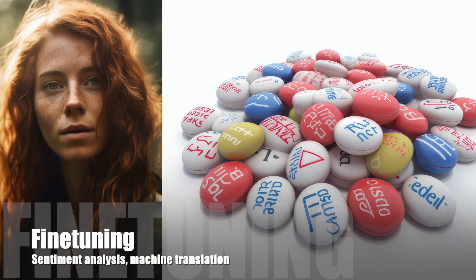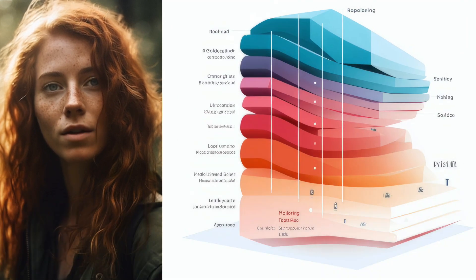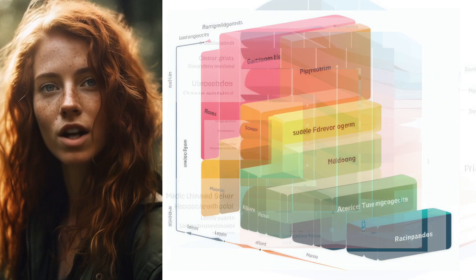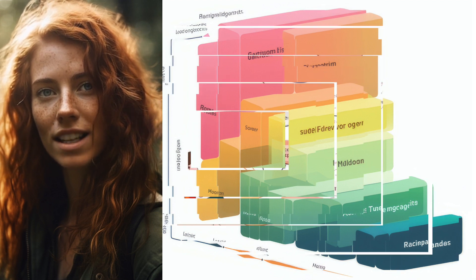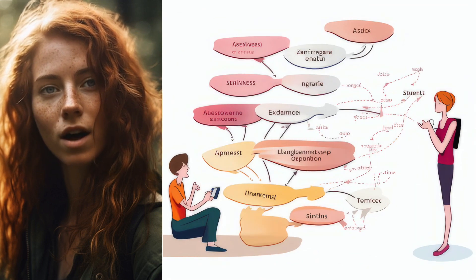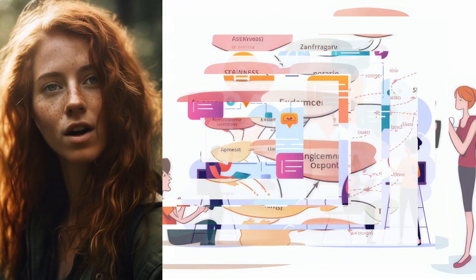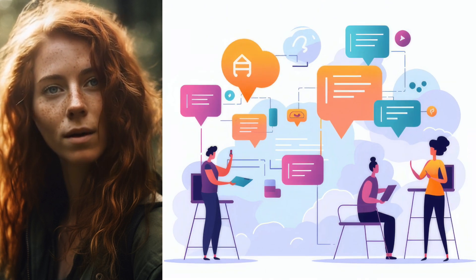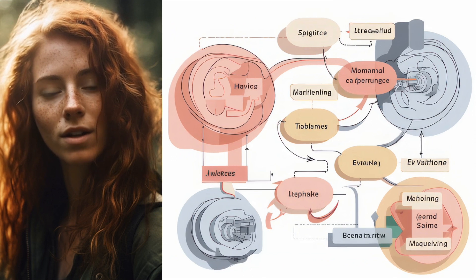Fine-tuning: After pre-training, LLMs can be fine-tuned on specific tasks such as sentiment analysis or machine translation. Fine-tuning involves training the model on a smaller dataset with labeled examples relevant to the target task. The model's weights are updated to minimize the loss function for the specific task.